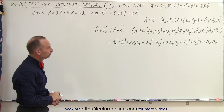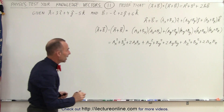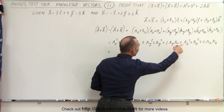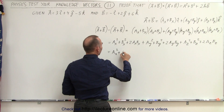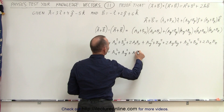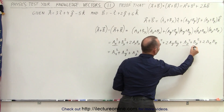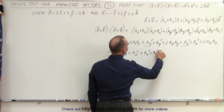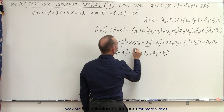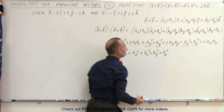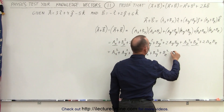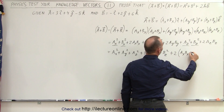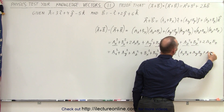Now we're going to collect terms in a certain way. We're going to collect all the squared x, y, and z terms of a, so we write this as ax squared plus ay squared plus az squared. We do the same for the b vector: plus bx squared plus by squared plus bz squared. And now we add all the remaining terms together, which is plus two times — factoring out the two — that would be ax·bx plus ay·by plus az·bz.